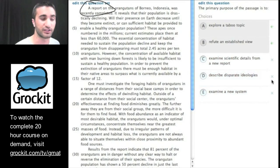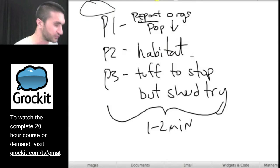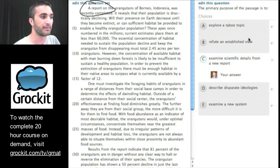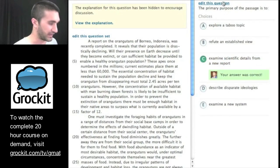Examine scientific details from a new report. Well, we wrote the word report here and I can see the word report here as well. So let's hold on to that. Describe disparate ideologies. I don't really recall two different things being compared. We probably would have noted them. Let's get rid of that and examine a new system. Not sure what system they would be referring to. So I'm feeling pretty confident that the answer is C. Let's try it out and we're correct.